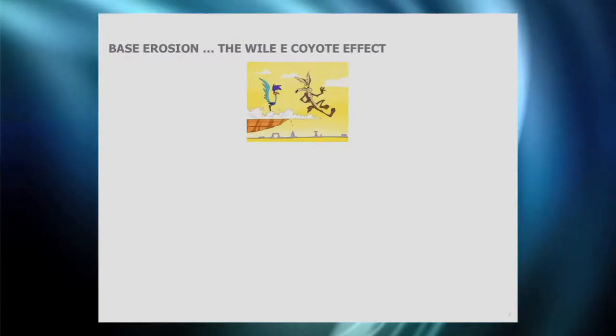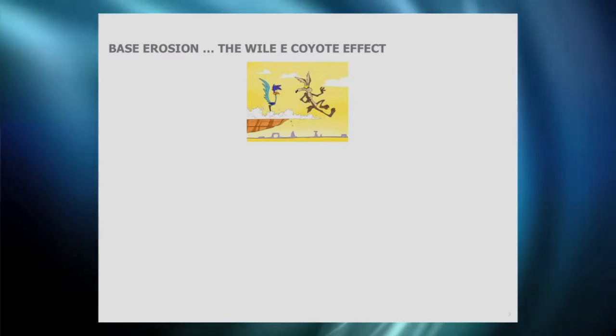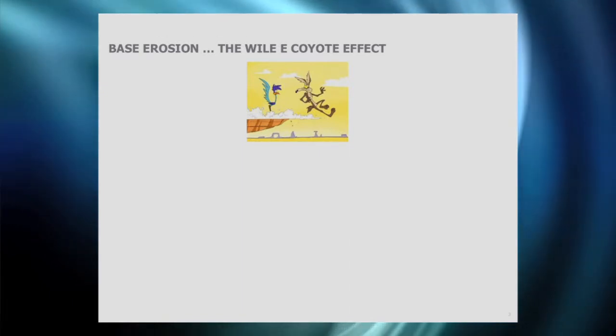The second thing I want to talk about is long-run effects and base erosion — the Wile E. Coyote effect. Wile E. Coyote chases the roadrunner, and you know what happens when he runs off a cliff: he keeps going, and it's only after a while does he realise there's nothing supporting him — and then he falls. That's exactly the same with marketing.